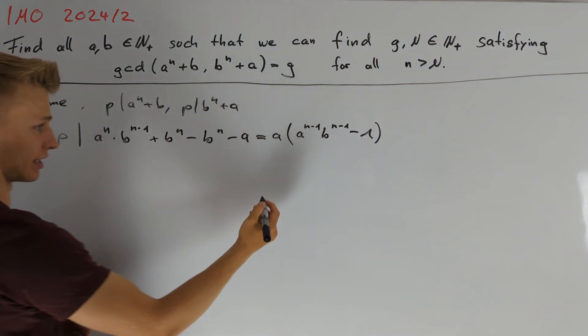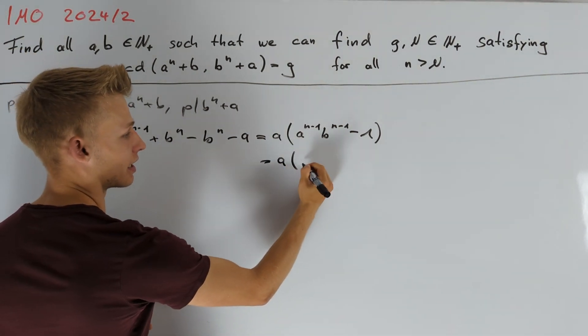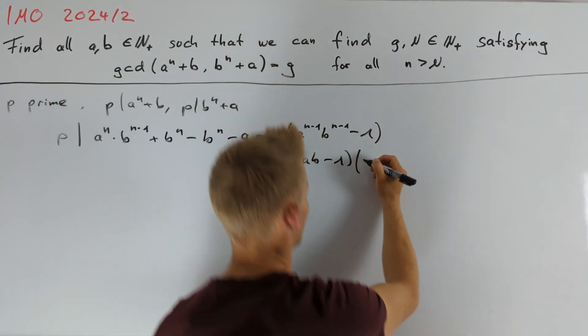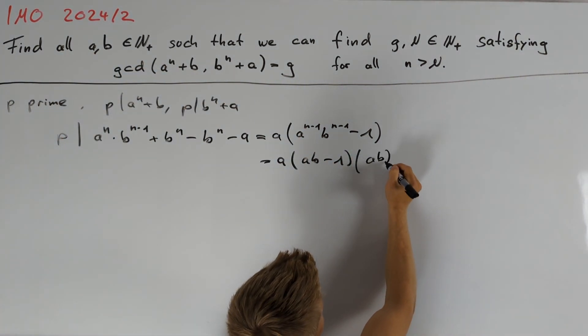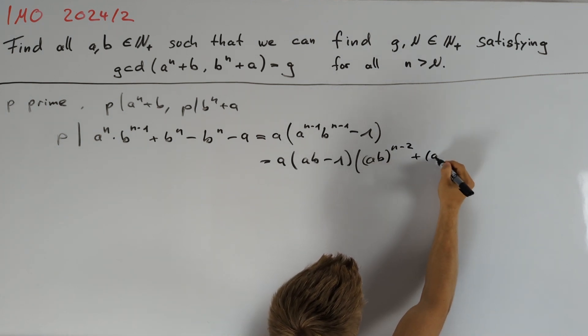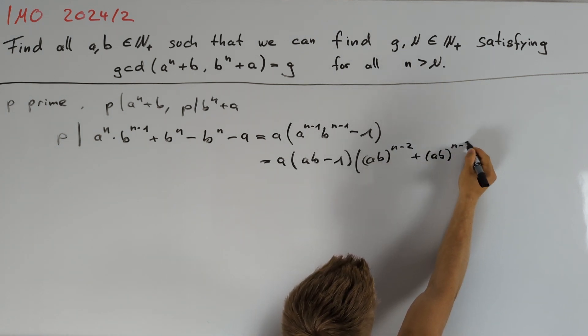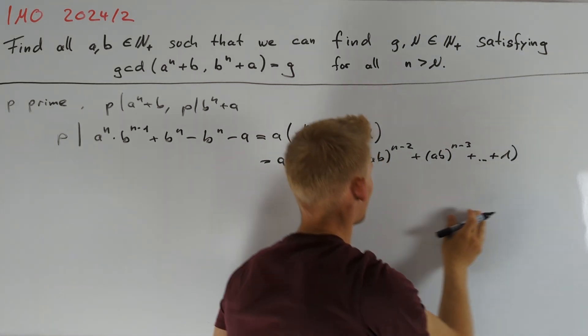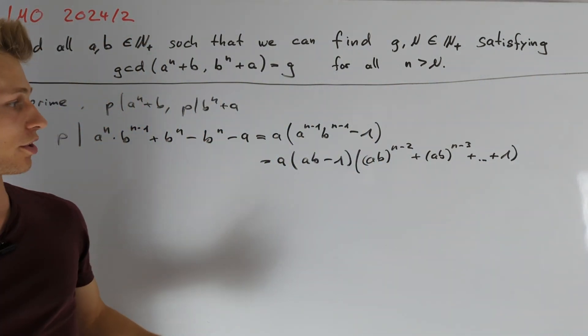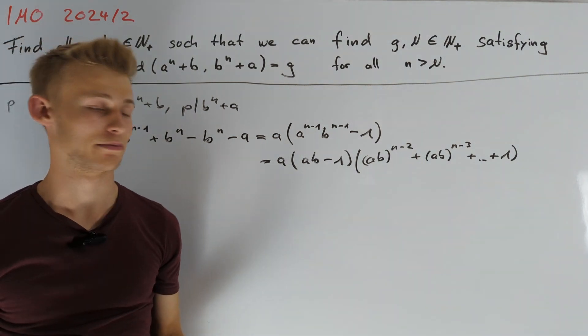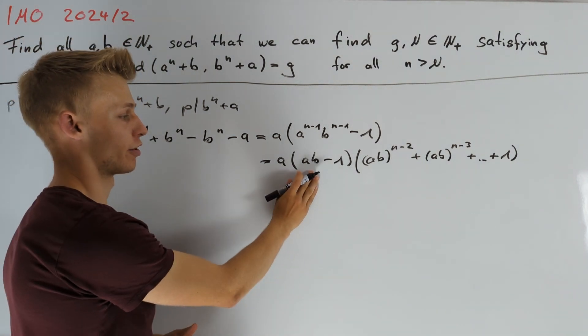For the second factor here on the right hand side, we know that there is a factorization. Namely we can write this as a times ab minus 1 and now times ab to the power of n minus 2 plus ab to the power of n minus 3 plus and so on plus 1. The second factor here is promising because it is symmetric in a and b, it is co-prime to a and b and it is independent of n.